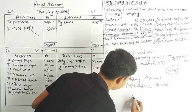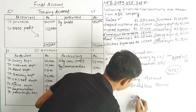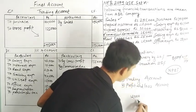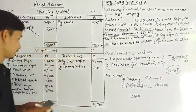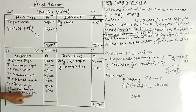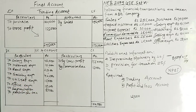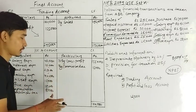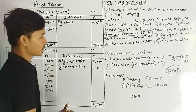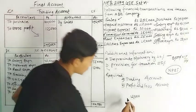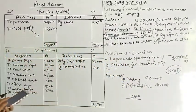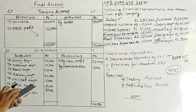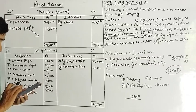Net Profit Before Tax is $12,000. Here is the discount — this discount is $10,000 minus 6.